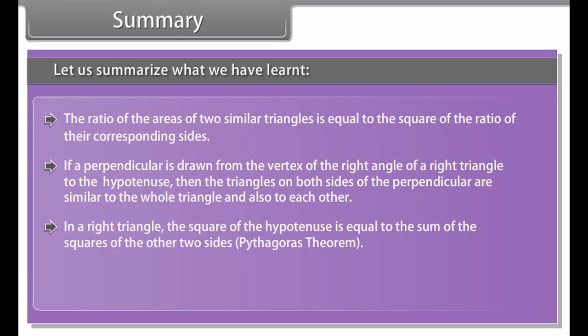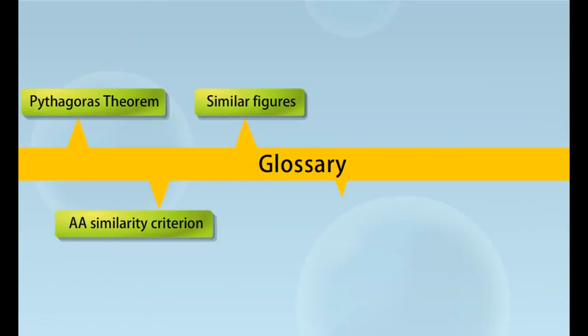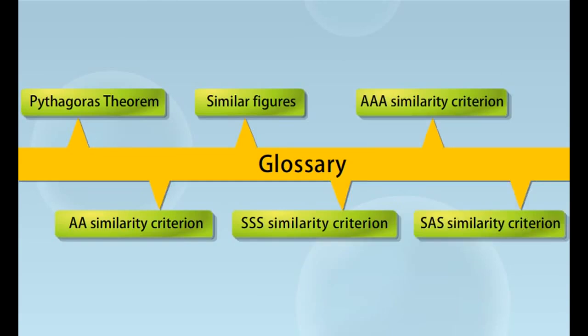Summary: The ratio of the areas of two similar triangles is equal to the square of the ratio of their corresponding sides. If a perpendicular is drawn from the vertex of the right angle of a right triangle to the hypotenuse, then the triangles on both sides of the perpendicular are similar to the whole triangle and to each other. In a right triangle, the square of the hypotenuse is equal to the sum of the squares of the other two sides. Converse: if in a triangle the square of one side equals the sum of the squares of the other two sides, then the angle opposite the first side is a right angle.